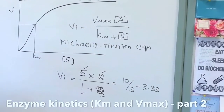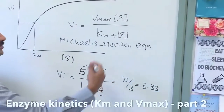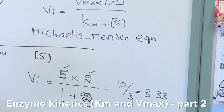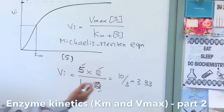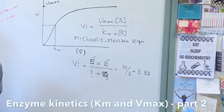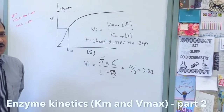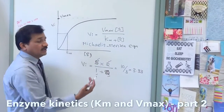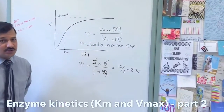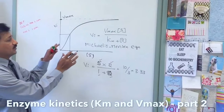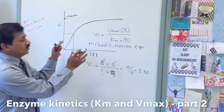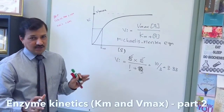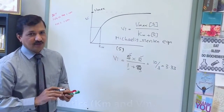Simplifying 10 over 3 gives 3.33, which is the velocity of the reaction in moles per second. This is how you use the Michaelis-Menten equation to calculate the reaction velocity of an enzyme or the transport capacity of a membrane transporter.